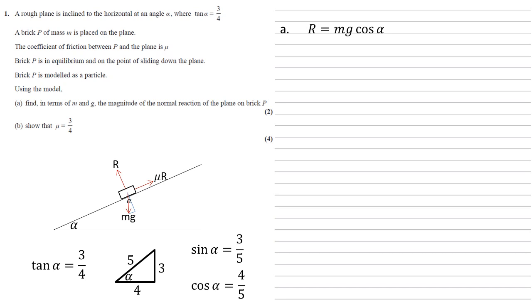If you're unsure of why it's cos alpha, I've put this blue right angle triangle on the diagram. With a bit of geometry, we can see that the top angle of the triangle is alpha. The force is the hypotenuse. We want the adjacent side that's perpendicular to the slope, hence we're going to go with cos alpha.